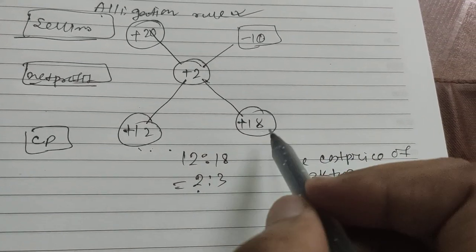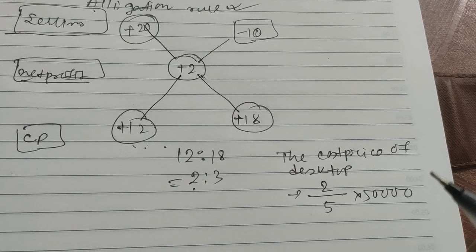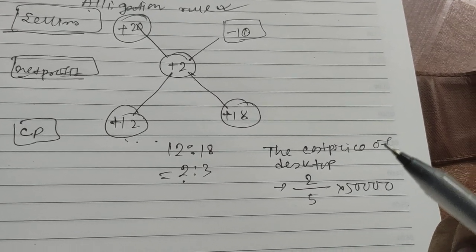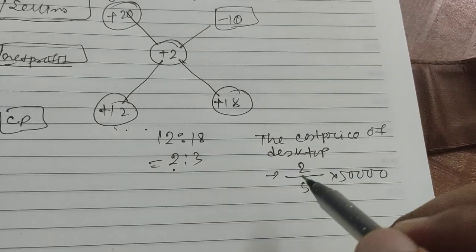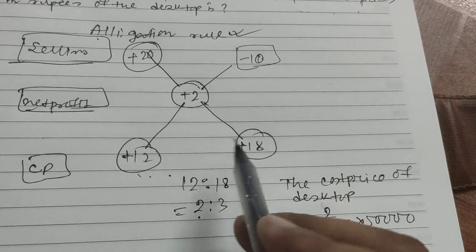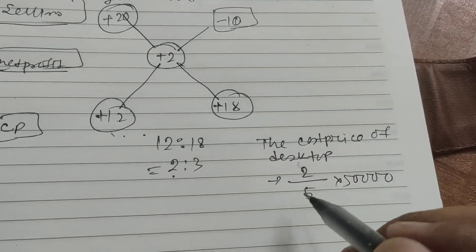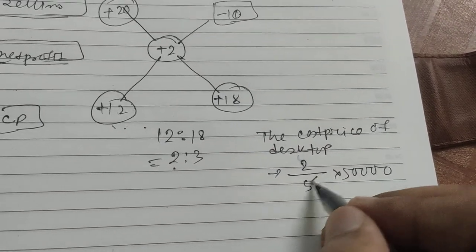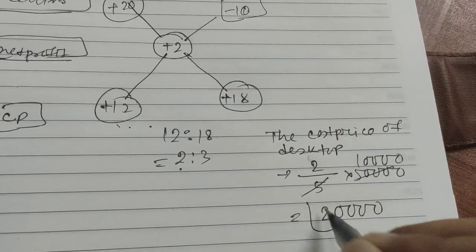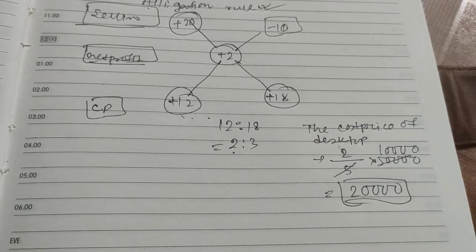18 is the ratio for the desktop. So the cost price of the desktop is 2 by 5 into 50,000, which gives us 20,000. This will be your answer.